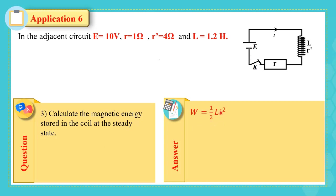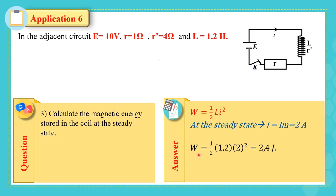Now calculate the magnetic energy stored in the coil at steady state. W = ½Li², and at steady state i = i_max = 2 A, so W = ½ × 1.2 × 2² = 2.4 J.